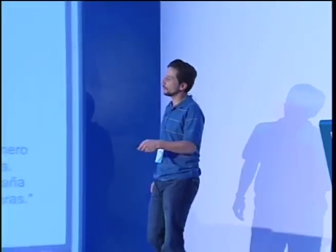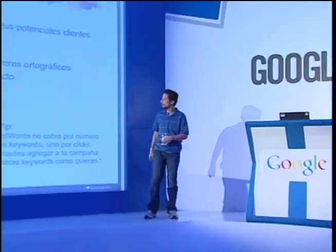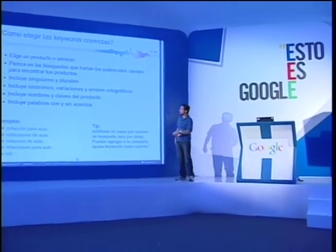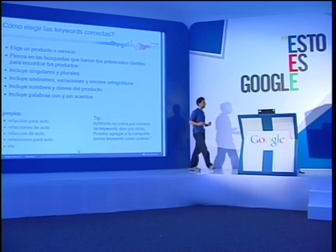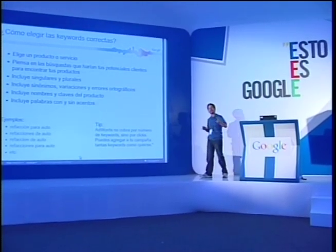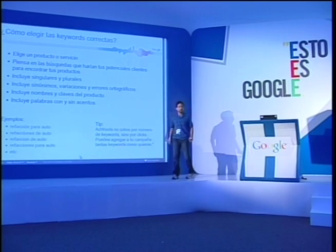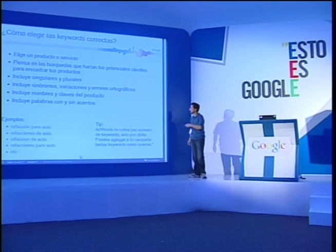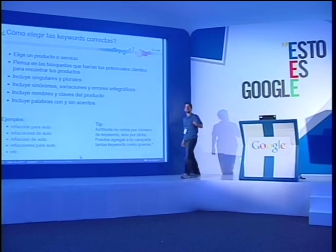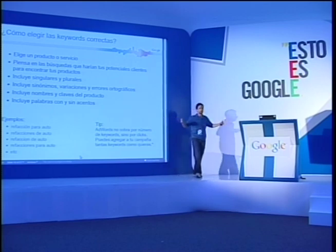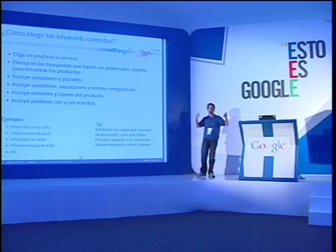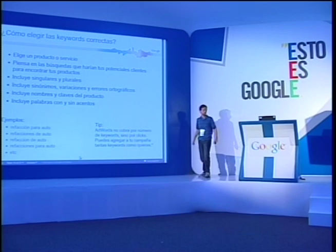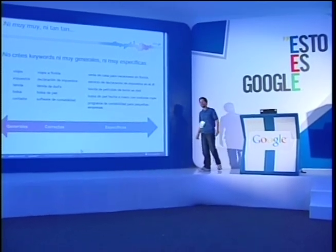También incluir nombres y claves de productos, porque usuarios expertos pueden buscar 'HP Pavilion B421'. Incluir palabras con acentos y sin acentos, con ñ y sin ñ. Por ejemplo, para 'refacciones de auto' pueden hacer muchas combinaciones: con acento, sin acento, en plural, en singular. Si tienen 10 mil palabras, Google no cobra más por eso; cobra por los clics recibidos. Entre más palabras, más alcance. Si hay palabras sin clics, no se cobra nada.